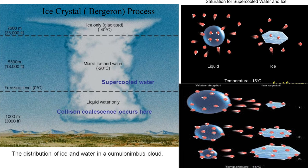With collision and coalescence, water droplets with opposite electrical charge meet together and become bigger and bigger, forming larger droplets. Also, if the temperature becomes lower and lower at higher altitudes — such as at 7,600 meters, well below the freezing point — then more and more ice crystals form.